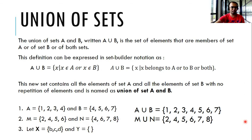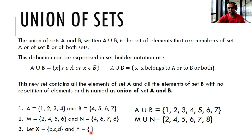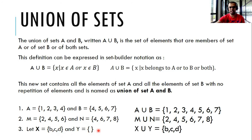Example number three: let X be the set {B, C, D} and Y be an empty set or null set. In this case, the union of X and Y is equal to the set {B, C, D}.